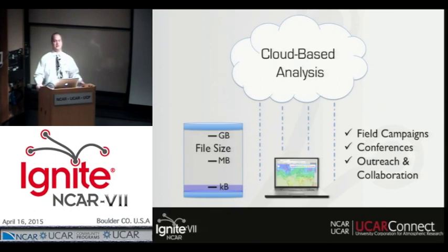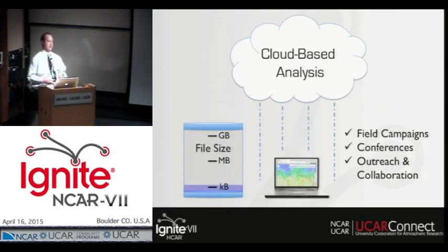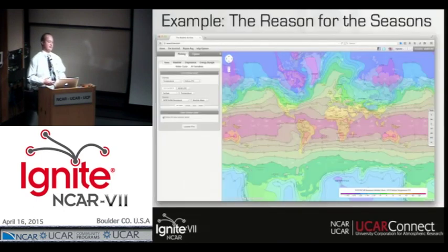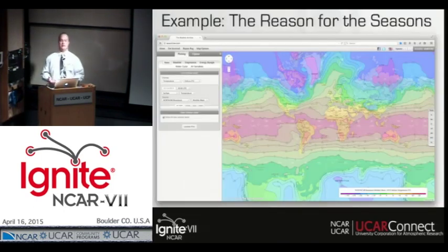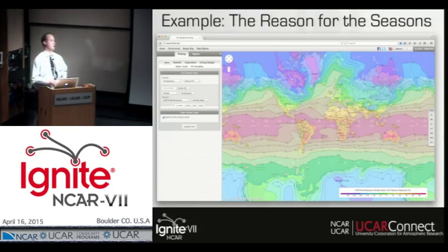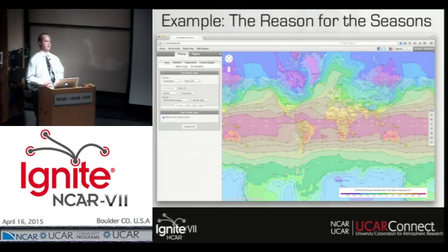So let's take a look at what my software can actually do, starting with a very specific, very basic event. We're just going to look at different seasons and different parts of the globe. Here's a temperature plot of northern hemisphere winter surface temperatures for the month of January.